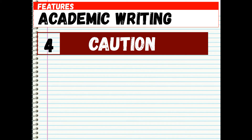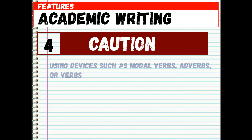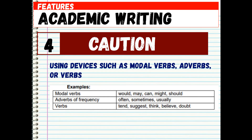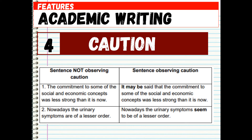Four: caution. Caution is an important feature of academic writing — the concept of cautious language, often called hedging or vague language. Caution is needed to avoid sweeping generalizations. It is achieved through using devices such as modal verbs, adverbs, and verbs. Examples of modal verbs: 'would,' 'may,' 'can,' 'might,' 'should.' Adverbs of frequency: 'often,' 'sometimes,' 'usually.' Verbs: 'tend,' 'suggest,' 'think,' 'believe,' 'doubt.' There are also modal adverbs, modal adjectives, modal nouns, 'that' clauses, and 'to' clause plus adjective.